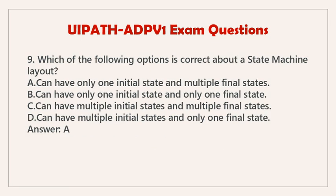Question 9. Which of the following options is correct about a state machine layout? A. Can have only one initial state and multiple final states. B. Can have only one initial state and only one final state. C. Can have multiple initial states and multiple final states. D. Can have multiple initial states and only one final state. Answer: A.